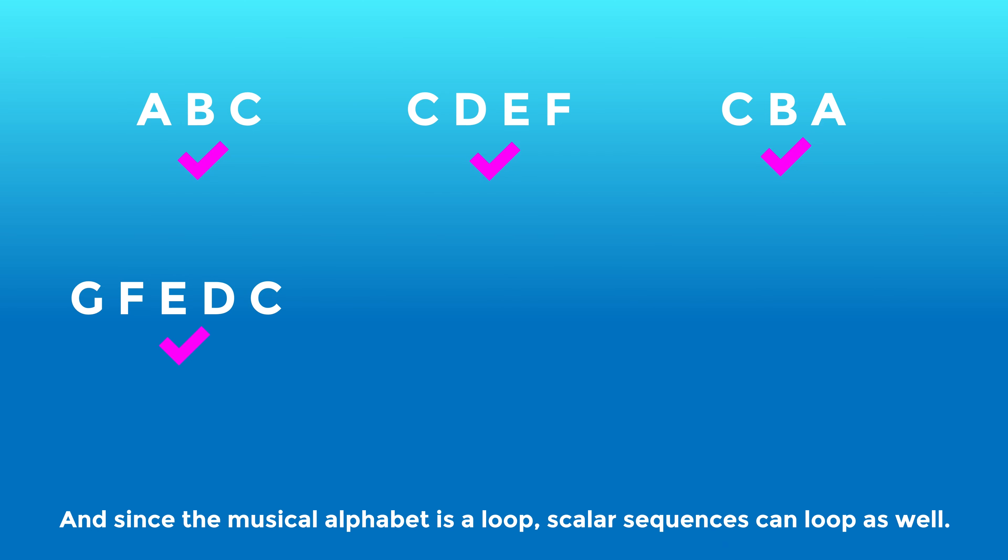And since the musical alphabet is a loop, scalar sequences can loop as well. You must learn to recognize when notes form a scalar sequence and when they do not.